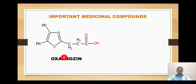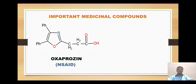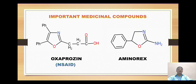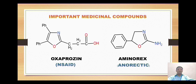Now for some important medicinal compounds: the first is oxaproxen, which is a very good non-steroidal anti-inflammatory drug. The second molecule is minorex, considered an anorectic agent, meaning it stimulates the weight loss process. That covers all the important information about oxazole. Thanks for watching — please like, share, and subscribe.